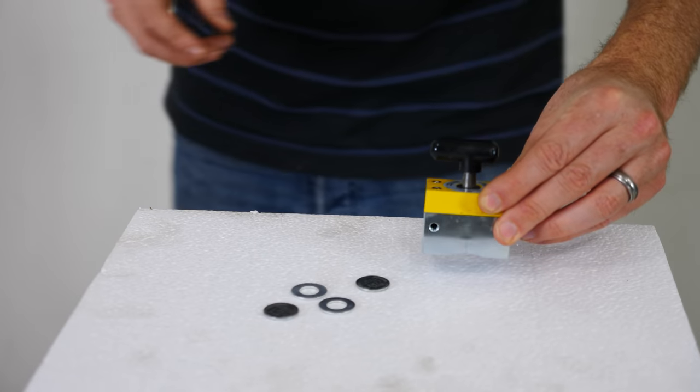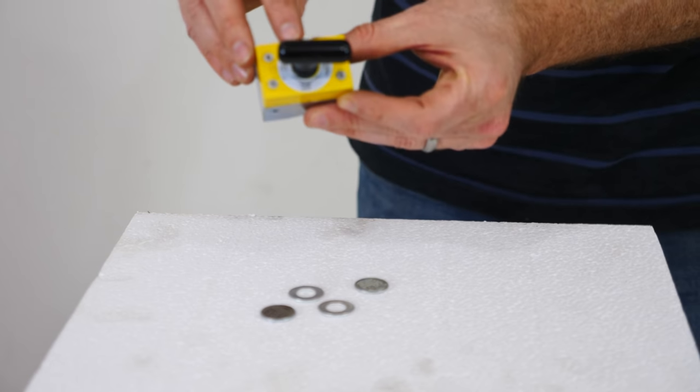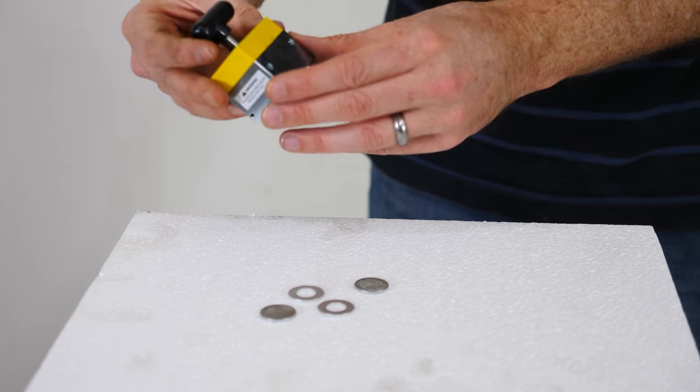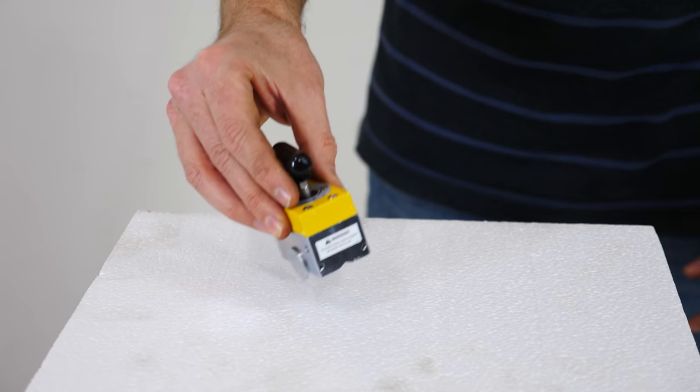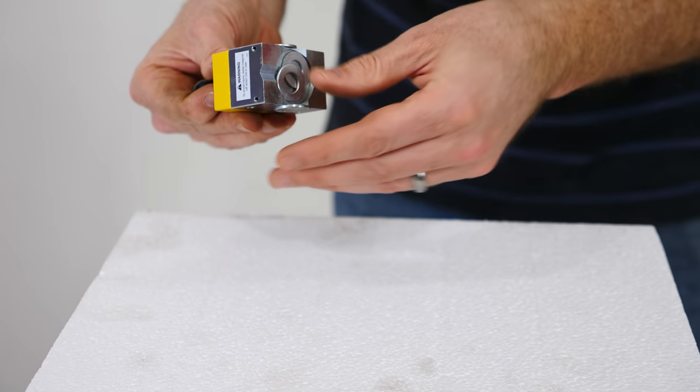But what if there's a way to intelligently turn off and on permanent magnets? Well it turns out there is a way to do this with something called a mag square. So notice on here it has an on-off switch. This is a permanent magnet, this is not an electromagnet.